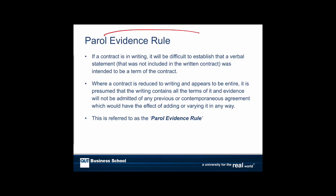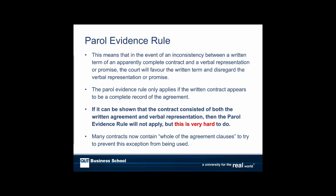The parol evidence rule — where 'parol' really means oral — states that if a contract is in writing, it's difficult to establish a verbal statement was intended to be a term. The courts say: if it was so important you wanted it to be a term, you should have written it down — everything else is written down, so why didn't you write this? Where a contract is in writing and looks to be complete, it's presumed that the writing contains all of the terms, and oral evidence won't be admitted to add or vary it. If there's an inconsistency between what's in a written complete contract and a verbal representation, the court favors the written term.